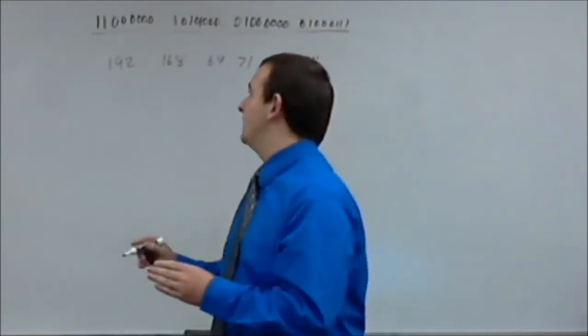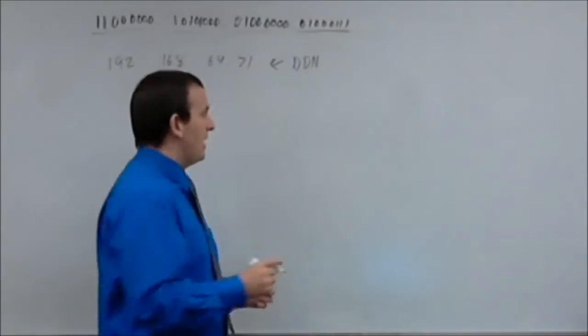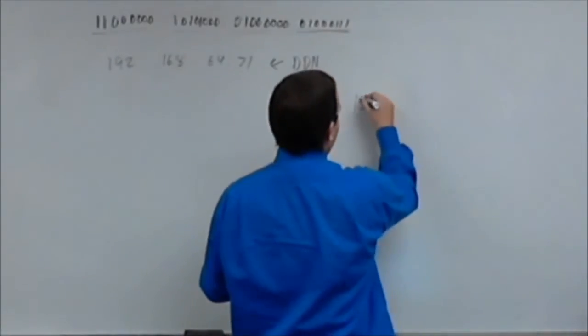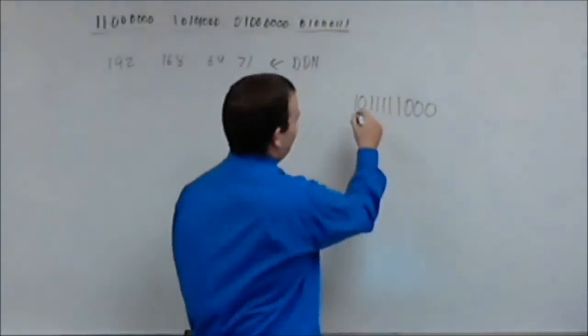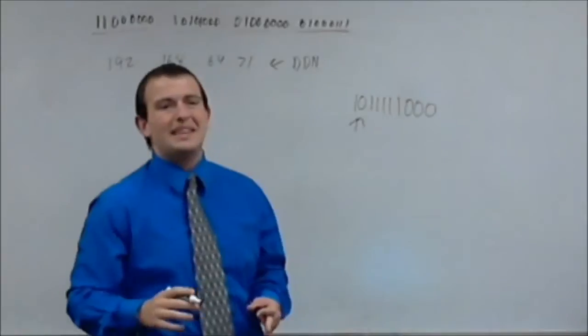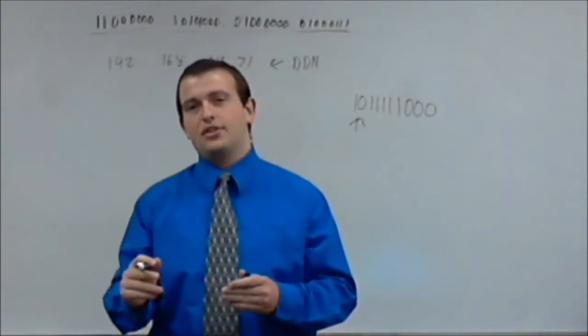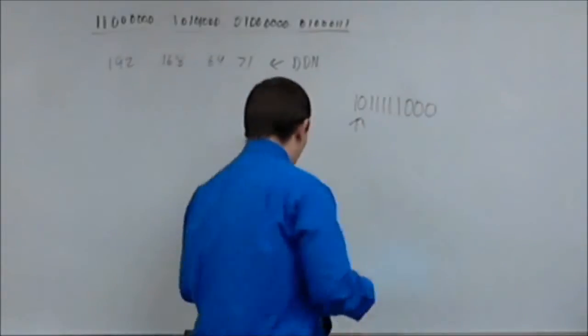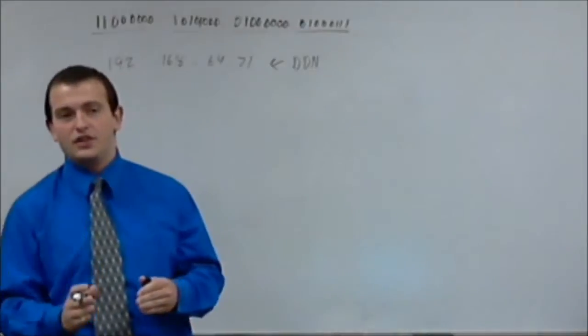So, you cannot take and put an invalid subnet would be something like 1011111000 would be an incorrect deal because this zero right here can't be there. Ones have to group together and zeros have to group together in subnet masks. So, this is simply because you're trying to separate the two. There's got to be a fine line in between the two.